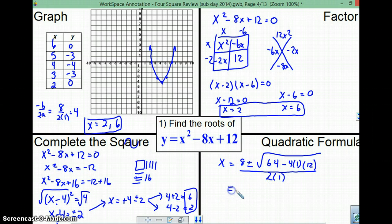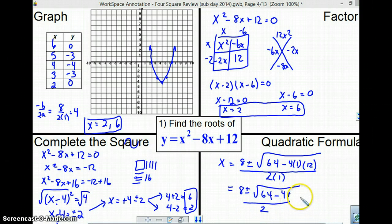All right. Let's simplify. This is equal to 8 plus or minus the square root of 64 minus 48 all over 2. We're going to run out of room, as usual. All right. Let's simplify. What's 64 minus 48?